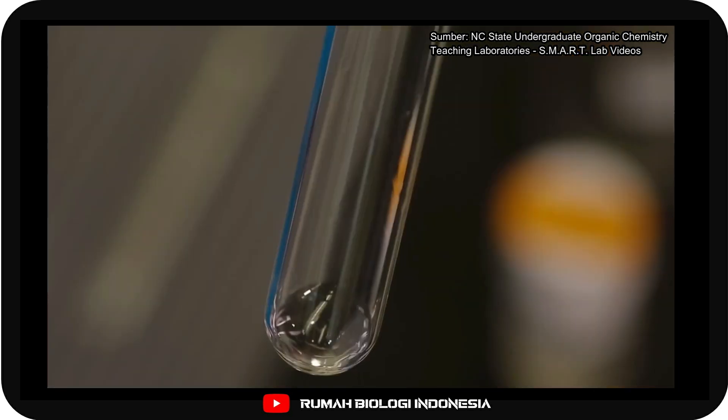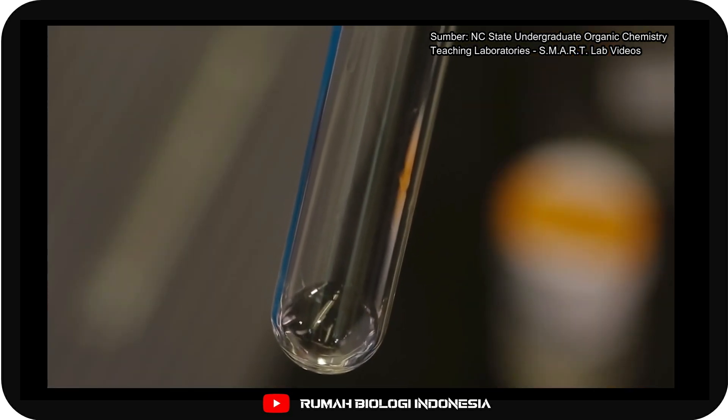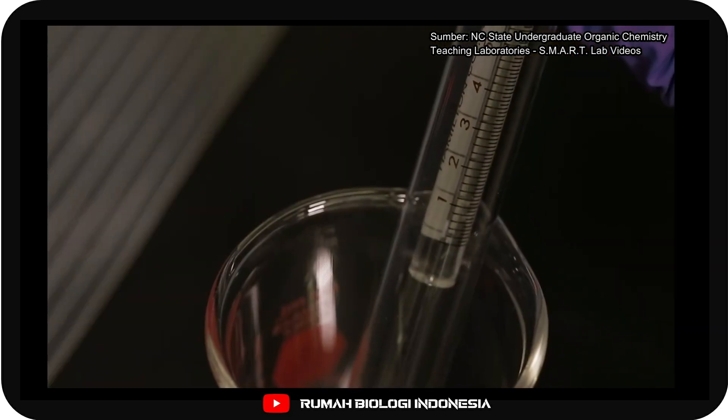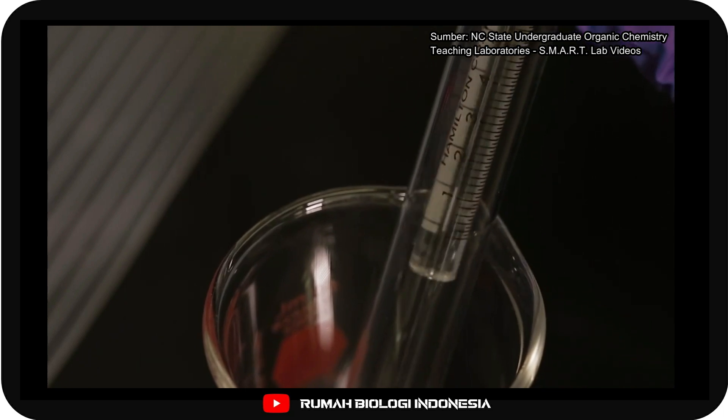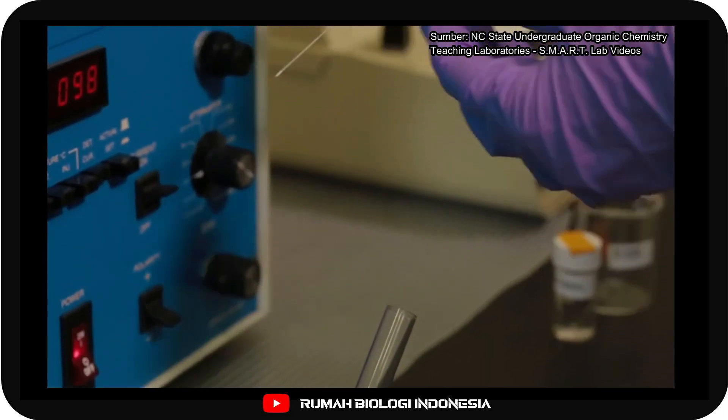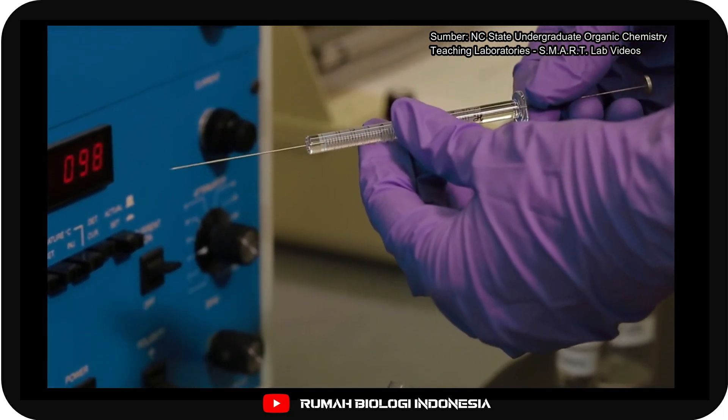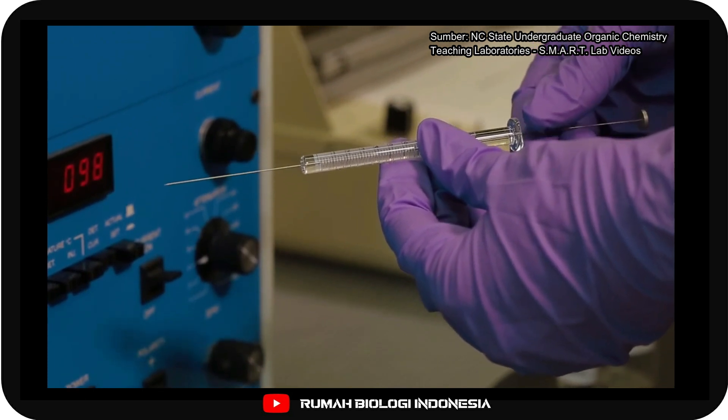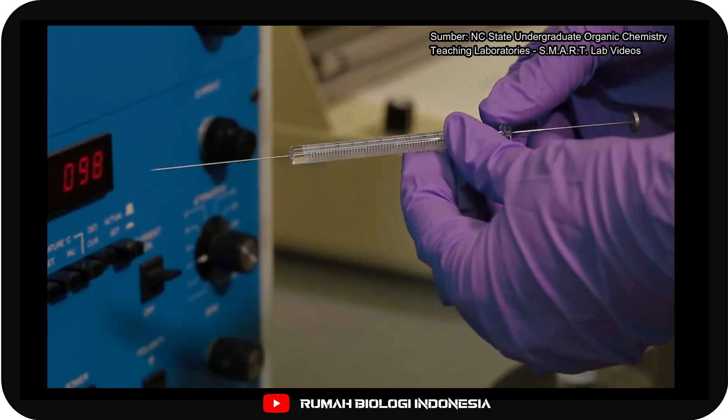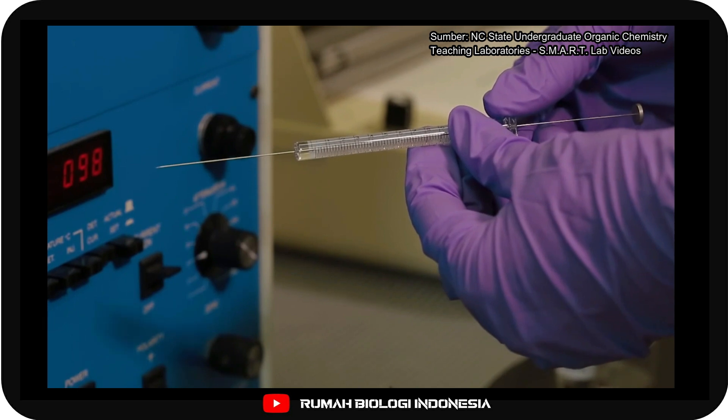To run a GC, you first need to prepare the sample for injection. Using a small syringe, collect between 1 and 5 microliters of the sample in the syringe, followed by 3 to 4 microliters of air. Be sure that your sample is free of drying agent to avoid clogging the syringe.